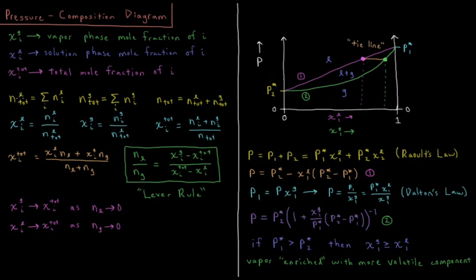n_tot_l is equal to the sum over all components of nᵢˡ — the total number of moles in the liquid is equal to the sum over all components of however many moles of liquid there are. The total number of moles in the vapor phase is equal to the sum over all components of the number of moles of each component in the vapor phase. The total number of moles is the sum of the liquid moles plus the gas moles. The mole fraction of component i in the liquid is equal to the number of moles of i in the liquid divided by the total number of moles in the liquid.